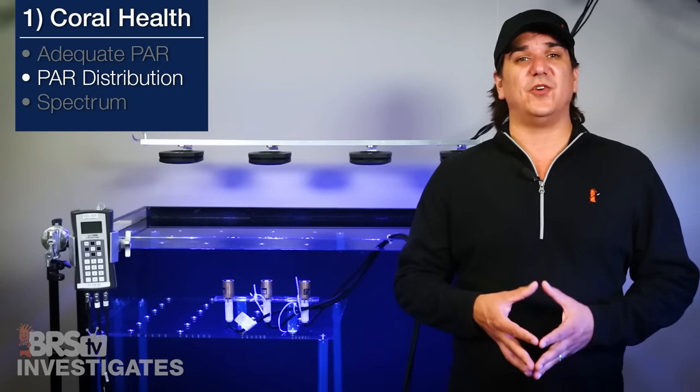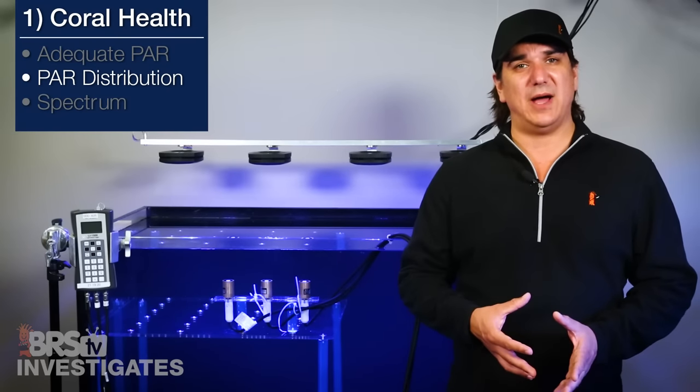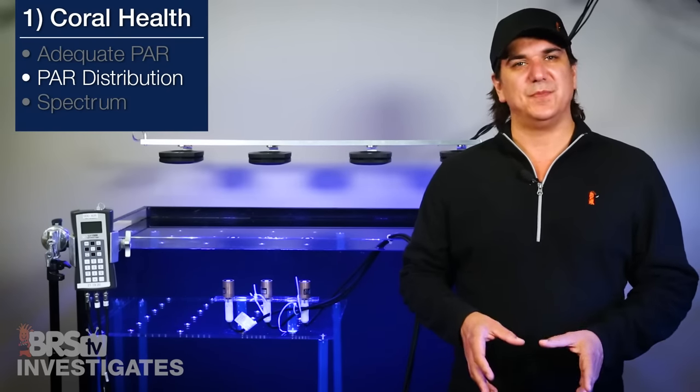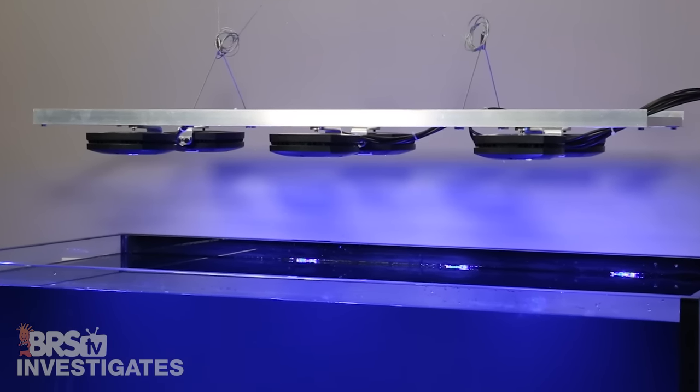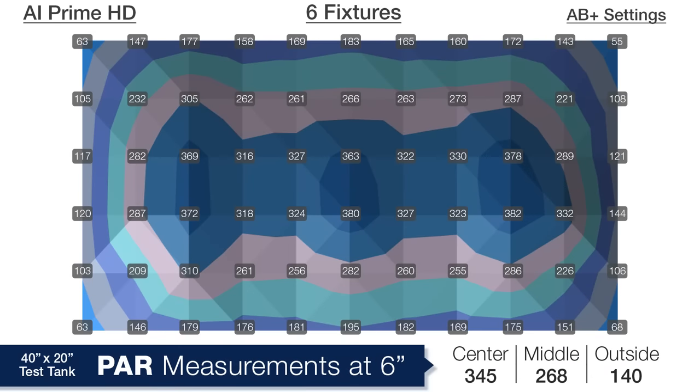Now changing things up a bit and looking for even distribution from front to back to get a bit better coverage, with six primes—again it sounds like a lot but it is just one and a half Hydra 52's—starting with the depth of six inches you can already see the performance on the front of the tank is much higher but in some ways we traded increased performance on the front and back of the tank for decreased performance on the sides.